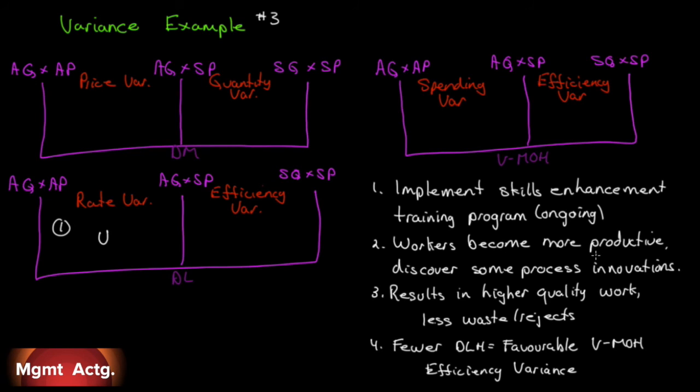Well, what happens here? Workers become more productive. If they're not becoming more productive, then obviously you're not enhancing skills very much. Workers become more productive, and they can possibly discover some process innovations where they can change the standard. So, instead of three and a half hours per unit, they may be able to do it in three hours per unit with the skills enhancement, plus discover some time-saving techniques that brings it down even more to two and a half hours per unit. So, you will end up with a favorable efficiency variance. Not only that, more productive workers that are more skilled result in higher quality work, so you have less waste and rejects, so you would end up with a favorable quantity variance.